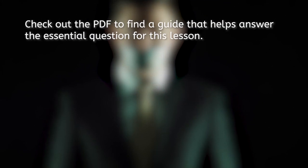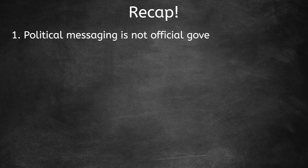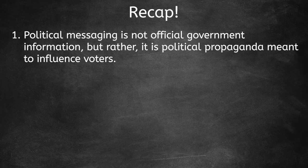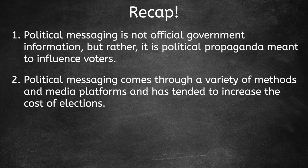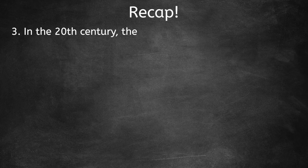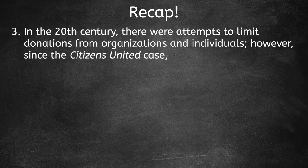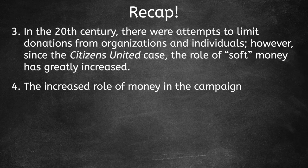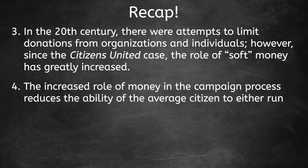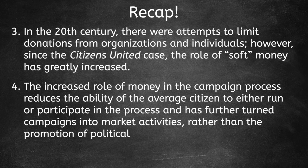Check out the PDF to find a guide that helps answer the essential question for this lesson. Today we learned that political messaging is not official government information, but rather political propaganda meant to influence voters. Political messaging comes through a variety of methods and media platforms and has tended to increase the cost of elections. In the 20th century, there were attempts to limit donations from organizations and individuals; however, since the Citizens United case, the role of soft money has greatly increased. The increased role of money in the campaign process reduces the ability of the average citizen to either run or participate, and has further turned campaigns into market activities rather than the promotion of political ideas.